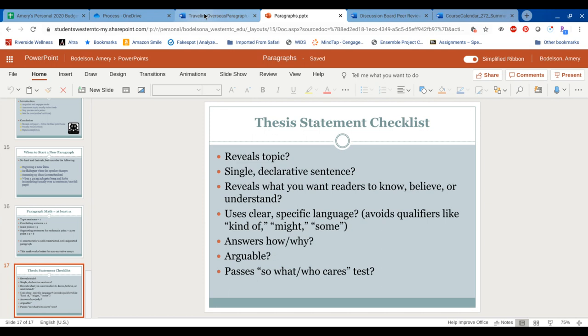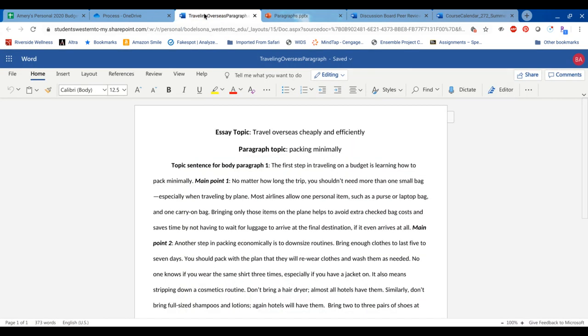So I'm going to transition over to a paragraph, and I will place this up on Blackboard so you can see it in more detail. But I've written a body paragraph using paragraph math, and I have written it not on one of the topics that you have for your essay, but on a different topic just to stretch the old muscle a little bit. And so you will see I have a topic sentence. The first step in traveling on a budget is learning how to pack minimally. And then this entire paragraph talks about packing.